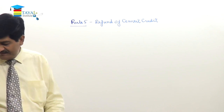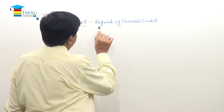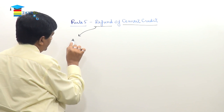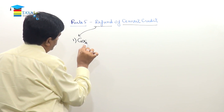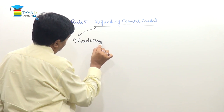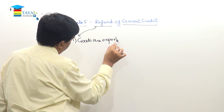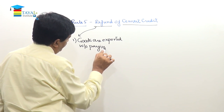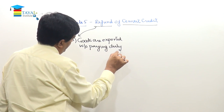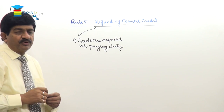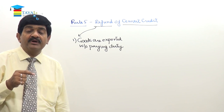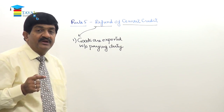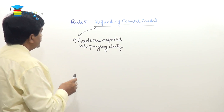When the refund is allowed there are two situations. One: goods are exported without paying duty. Whenever goods are exported without paying duty, the exporter is required to execute a bond in respect of realization of the export proceeds. So that is obvious — whenever goods are exported without paying duty, there is bound to be a bond.